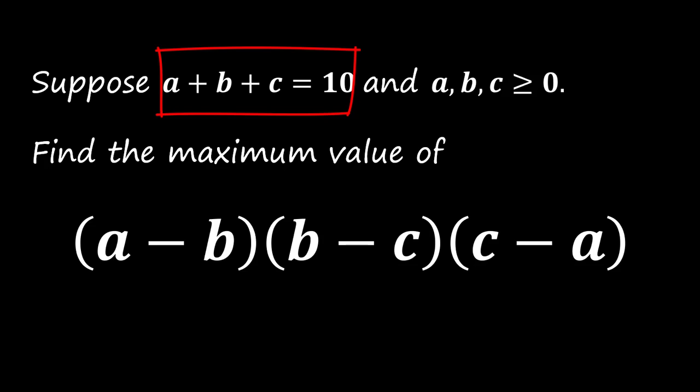Suppose a plus b plus c equals 10, and a, b, c are greater than or equal to zero. Find the maximum value of (a minus b) times (b minus c) times (c minus a).